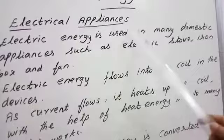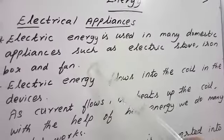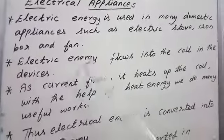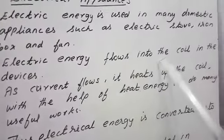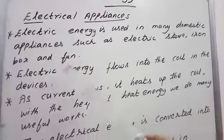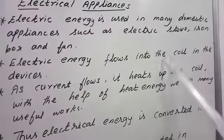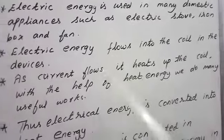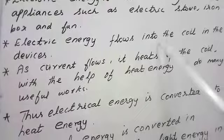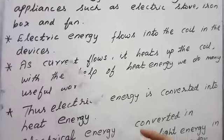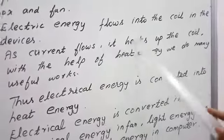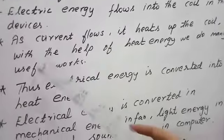These are the electric appliances — things that work on electricity. When you switch on the switch, the electric energy flows into the coil in the device. For example, if you switch on the mixie, the energy first gets into the coil. Then, as current flows, it heats up the coil.